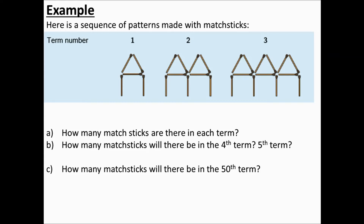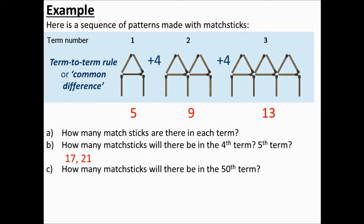Okay, so let's have a look. There are five matchsticks in the first term, nine matchsticks in the second term, and thirteen matchsticks in the third term. As you can see we're just adding four each time. So in the fourth and fifth terms we're going to have seventeen and twenty-one matchsticks respectively. Adding four each time is called the term-to-term rule — it's also known as the common difference for the sequence.